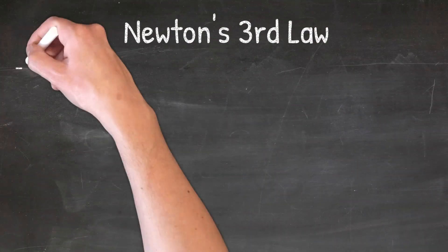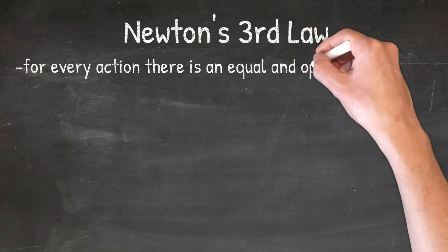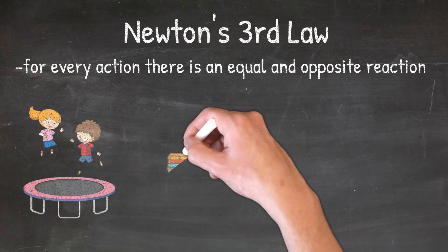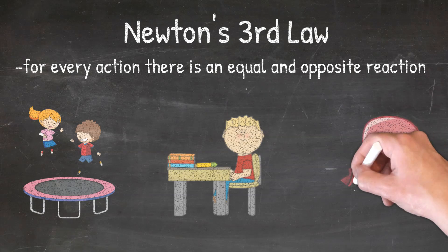Newton's third law of motion tells us that for every action there is an equal and opposite reaction. In other words, if object one is exerting a force on object two, then object two is exerting that exact same force back to object one. Some examples include jumping on the trampoline, sitting in a chair, and letting go of a balloon.